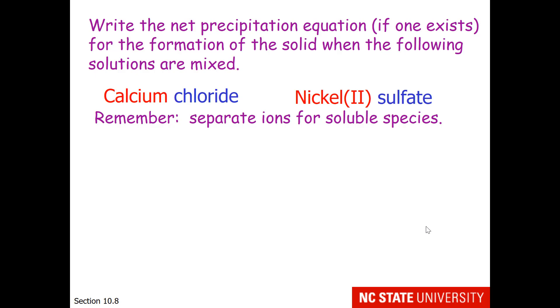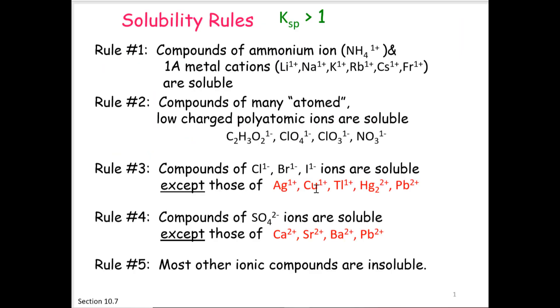Remember that we are going to separate ions for soluble species. So calcium chloride is soluble, and it will separate into these two ions. This would fall under rule 3, where compounds with chloride are soluble, and calcium 2+ is not on the exception list.